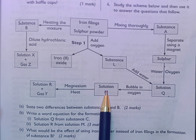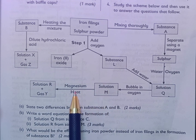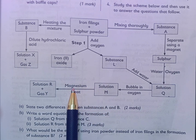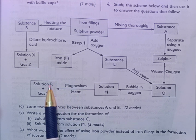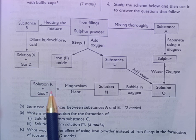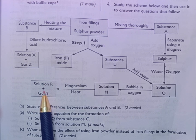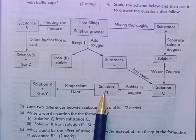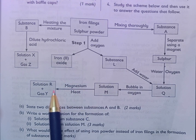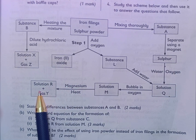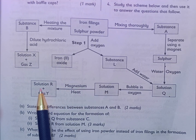Sulfuric acid is going to be reacted with magnesium in the presence of heat to form magnesium sulfate and hydrogen gas. Remember, when acids react with metals they form salts and hydrogen gas is produced in the process.